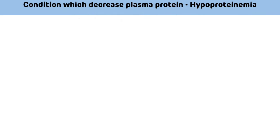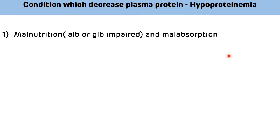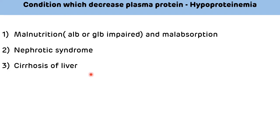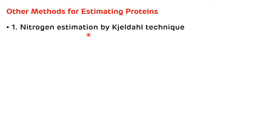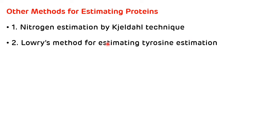Causes of hypoproteinemia — decreased plasma protein: first, malnutrition and malabsorption. Second, nephrotic syndrome, as there is loss of protein via the kidney. Third, cirrhosis of liver. Fourth, severe burns. Other methods for estimating proteins include nitrogen estimation by Kjeldahl/dye technique, Lowry method for tyrosine estimation, and turbidimetric method.